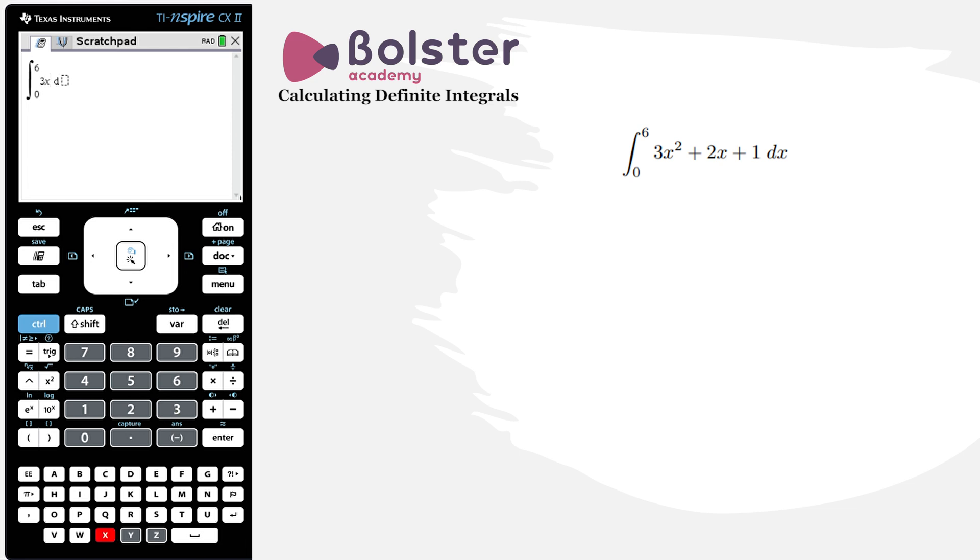3x squared plus 2x plus 1. And the most important thing to remember is we need to tell our calculator what we're integrating with respect to. So we need to put in a dx. Hit enter and there's my answer, 258.